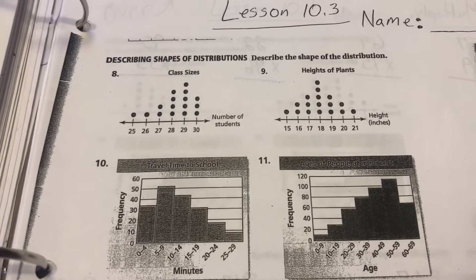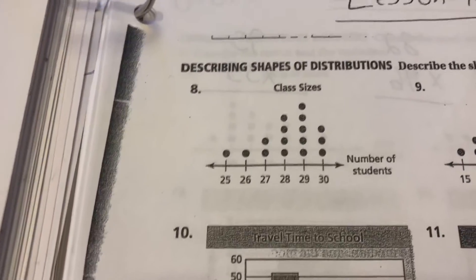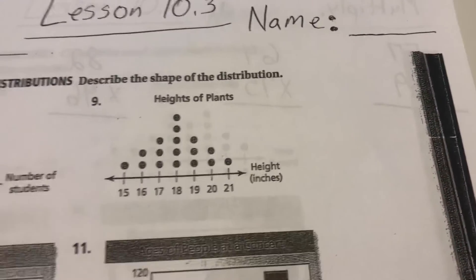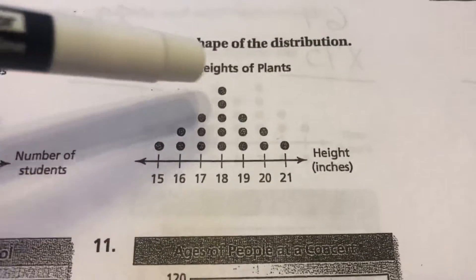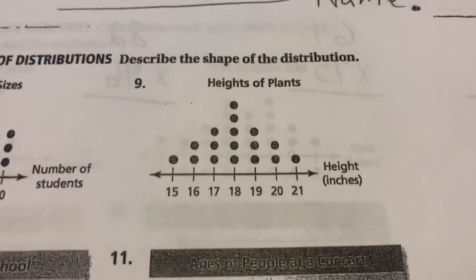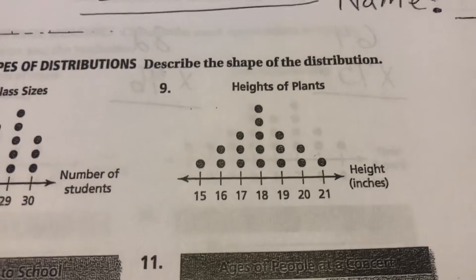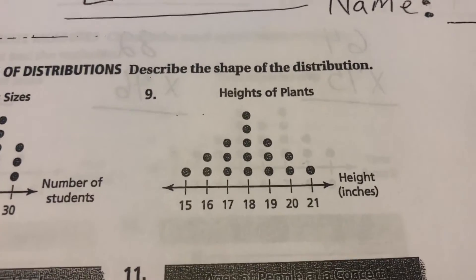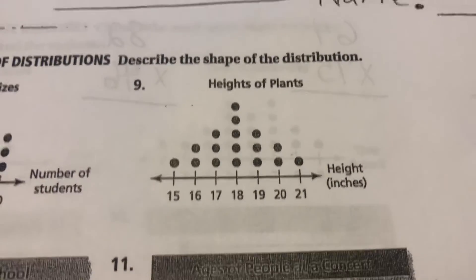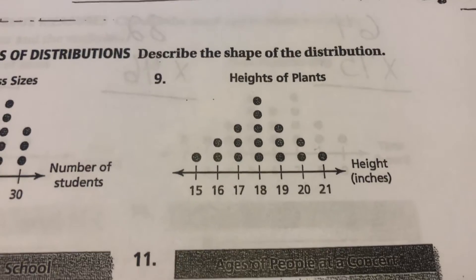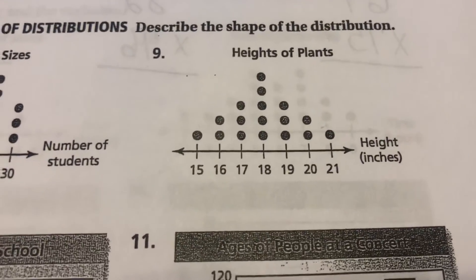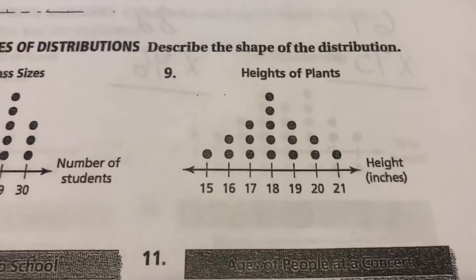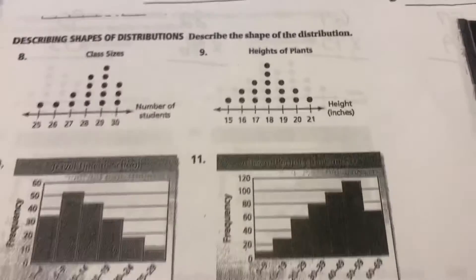When I look at number 10, that is definitely a symmetric shape, as it plateaus here. So I would say that the mean would be the measure that would describe the center, and I would use the variation, the mean absolute deviation, to describe the variation.